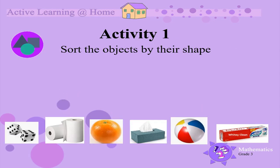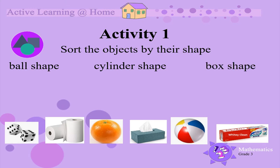Activity 1. Let's sort these objects by their shape. Decide whether each object is a ball shape, a cylinder shape, or a box shape.